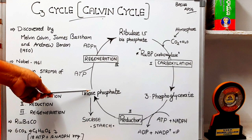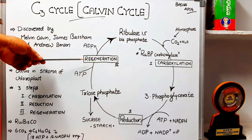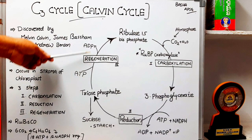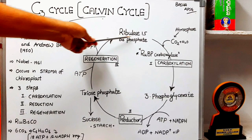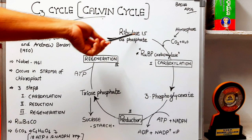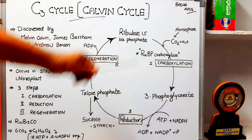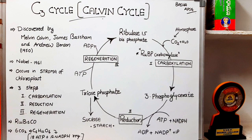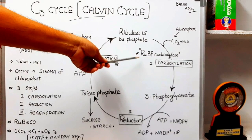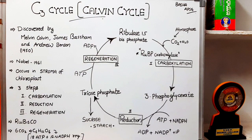A few molecules of triose phosphate help in the regeneration of ribulose 1,5-bisphosphate — this is the third step. In this step, ATP is utilized for phosphorylation. RuBP, that is ribulose 1,5-bisphosphate, is regenerated here. The most important point is that the enzyme which catalyzes the first reaction — carboxylation — is RuBP carboxylase. This is the most abundant enzyme on our planet. It also has oxygenation capacity, and that is why it is called RuBisCO — RuBP carboxylase oxygenase.